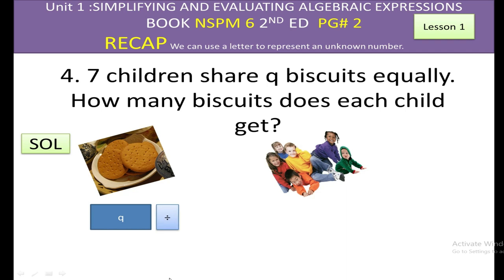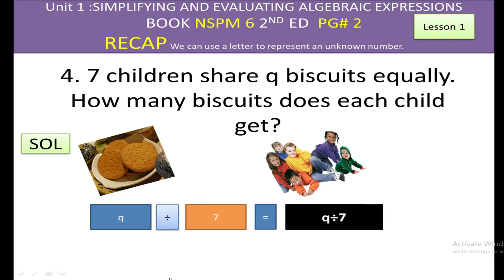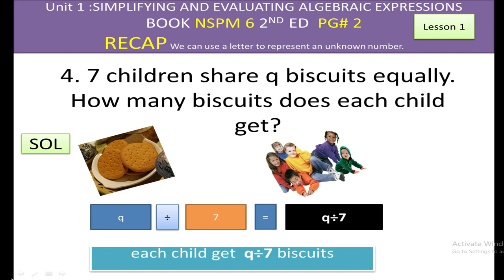We will divide these biscuits among the seven children. Each child will get q divided by seven. We cannot write seven divided by q because we are dividing the biscuits among the seven children. So each child will get q divided by seven biscuits. This is our answer.